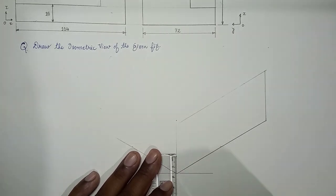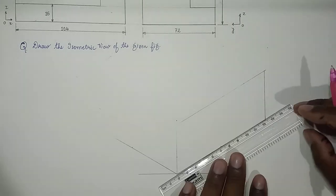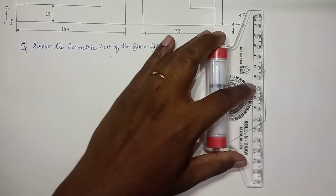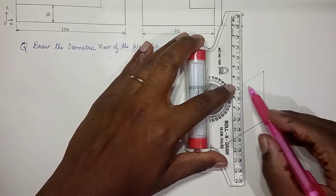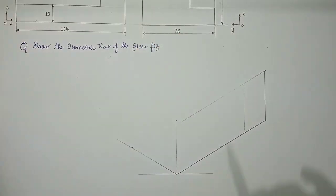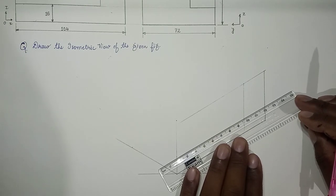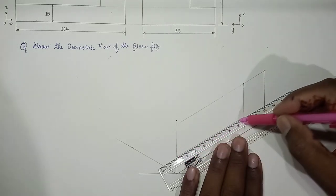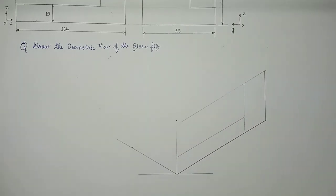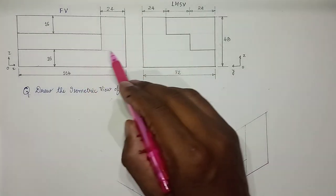So 24 could be marked along this, and we come down and we mark 16 over here - 16 mm on this side. So we get an L-like structure. We draw a line over here like this.